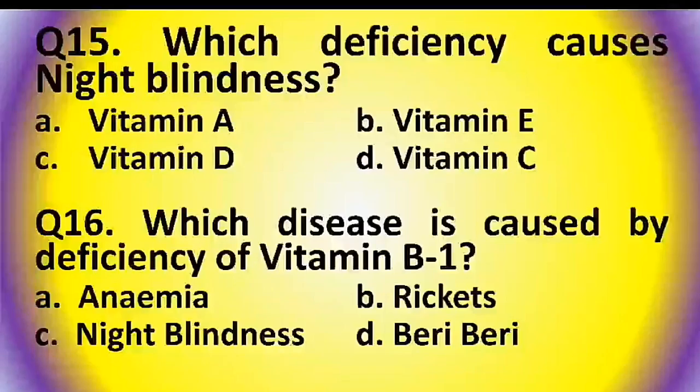Question 15: Which deficiency causes night blindness? Options are: Vitamin A, Vitamin E, Vitamin D, or Vitamin C. The answer is option A: Vitamin A.